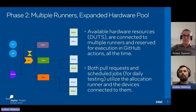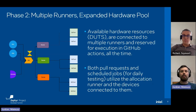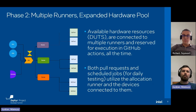The improved queue manager, increased number of runners, fair treatment of scheduled tasks and pull requests, dynamic runner assignment for pull requests, and restricted access for actors collectively contribute to a more optimized and effective workflow. We have finished Phase 2 and are now working to finish Phase 3.